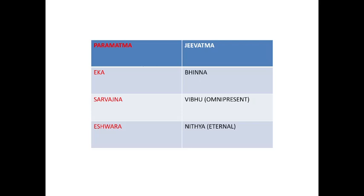Looking at the features of Paramatma and Jivatma: Paramatma is Eka — one in number — and Sarvatma. Jivatma is Pratidhishariram Bhinna — different body to body. Both are Vibhu and Nitya. Paramatma is called Ishwara, and it is Nitya. Jivatma is also Nitya, but it is body-specific.